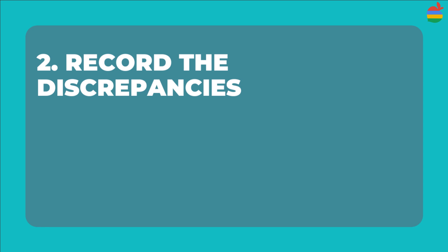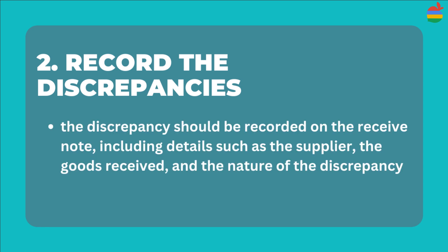Second, record the discrepancy. The discrepancy should be recorded on the receiving note, including details such as the supplier, the goods received, and the nature of the discrepancy.